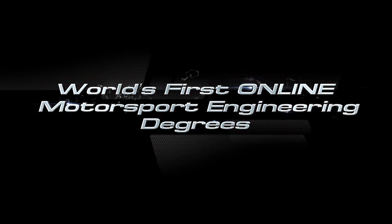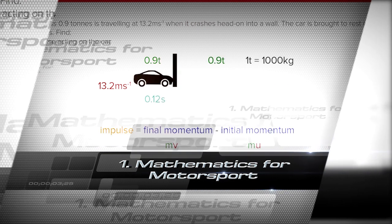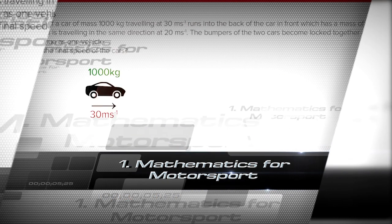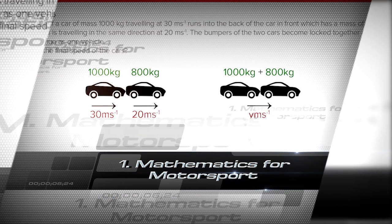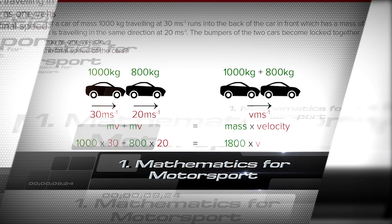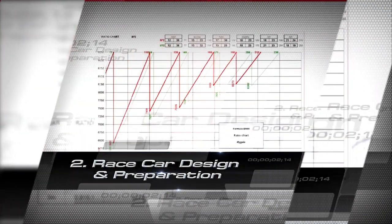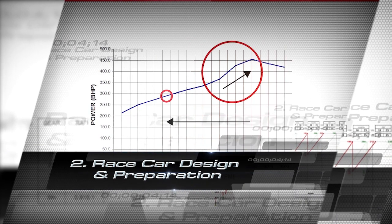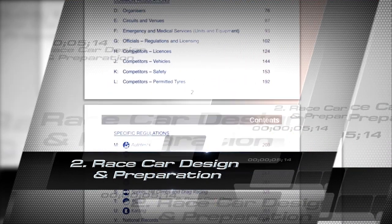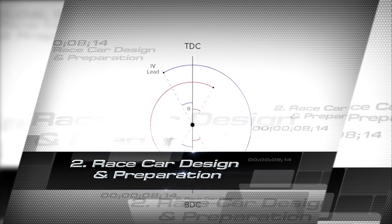During level four you will study four modules, starting with mathematics for motorsport where you'll develop the skills to calculate solutions to typical race vehicle engineering problems. You'll then move on to race car design and preparation where you'll be introduced to race rules and regulations and how to apply these to race vehicle designs. You will also recap on typical vehicle systems.